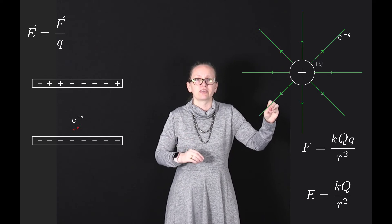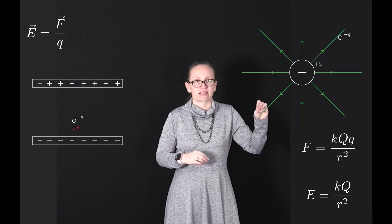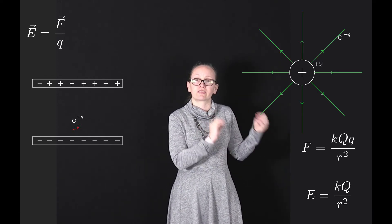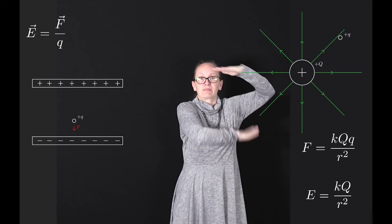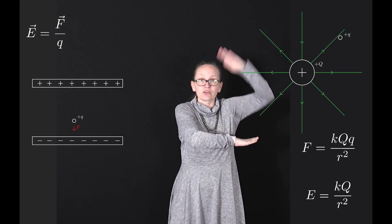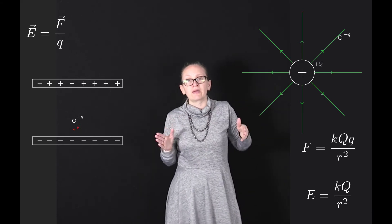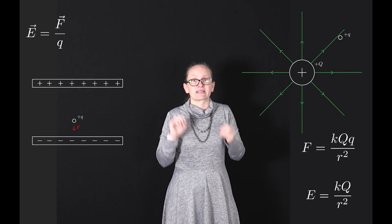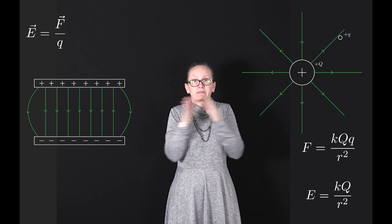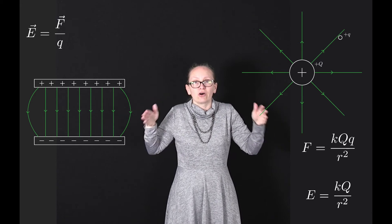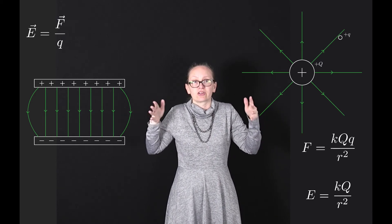If we imagine putting a test charge between these plates, they're going to feel a force, if it's a positive test charge, down towards the negative plate. So that tells us the direction of the electric field. It actually turns out that the electric field between plates like this is constant throughout. We can represent the field lines like this. You can see that the spacing between the field lines remains the same because the electric field strength is not changing.